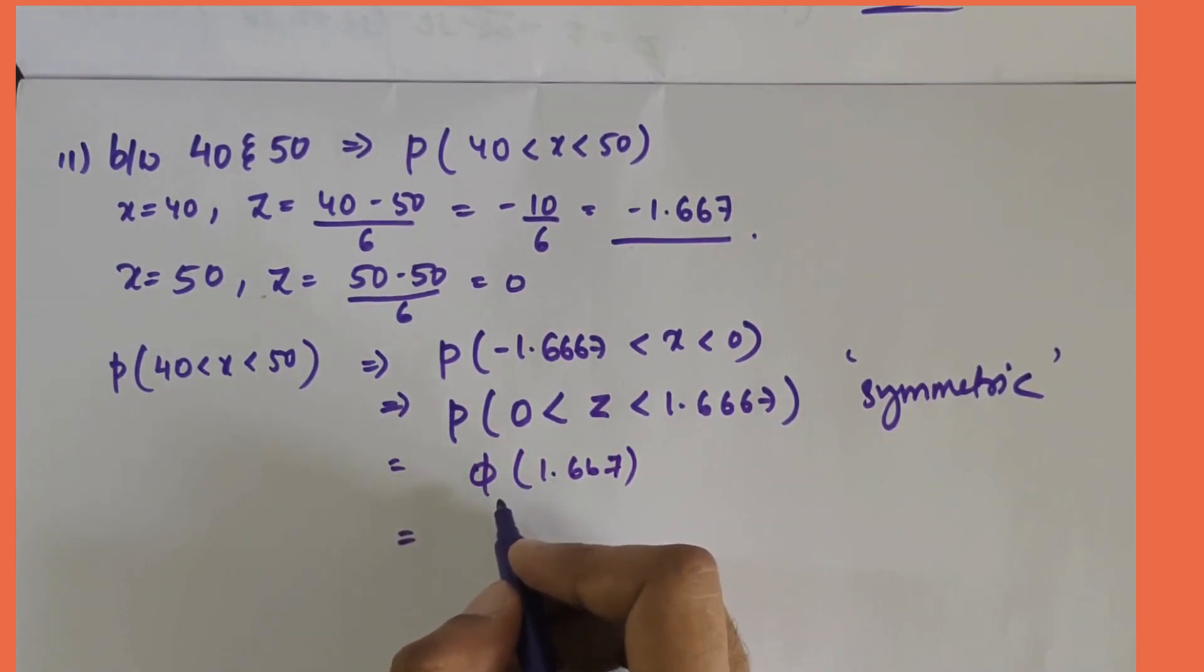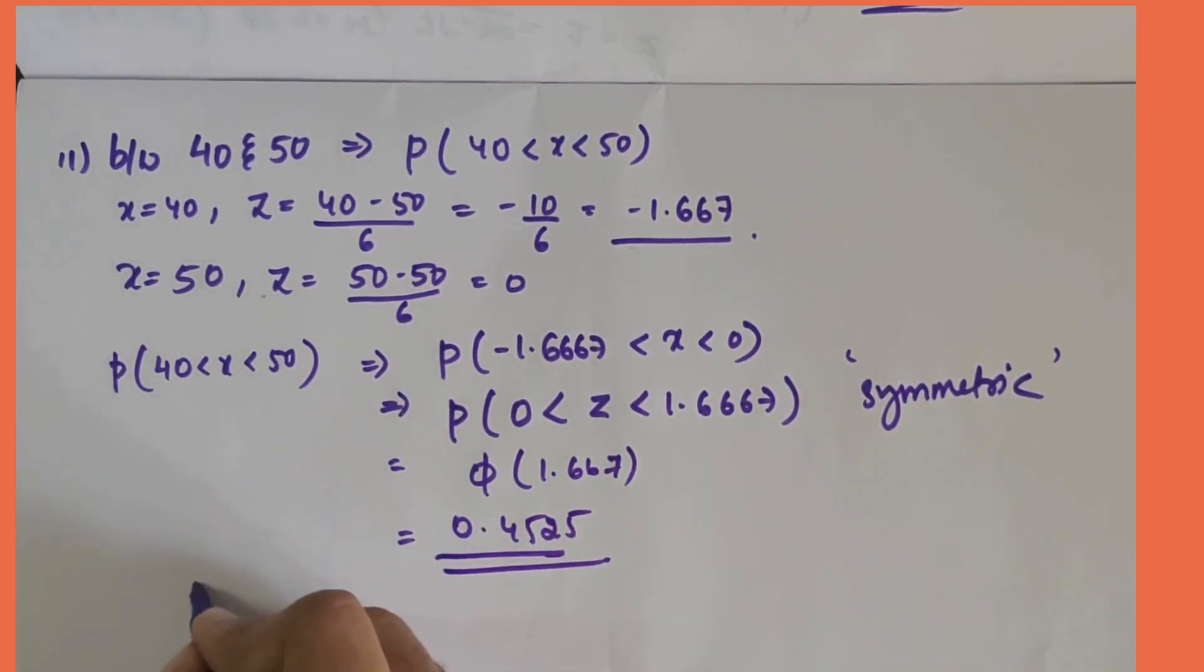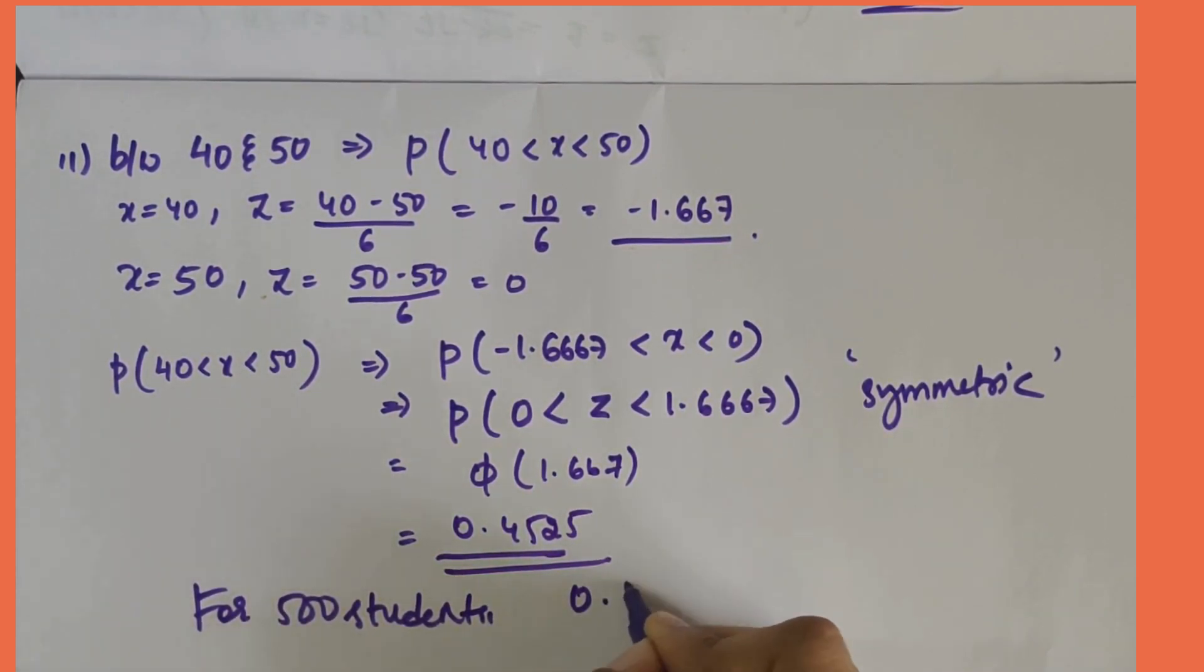Finding φ(1.667) we get it as 0.4525. For 500 students it would be 0.4525 into 500, that would give 226.